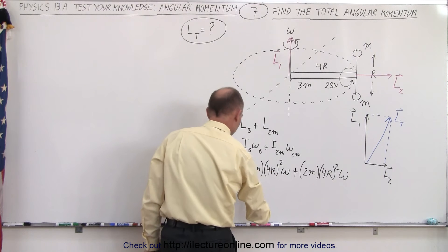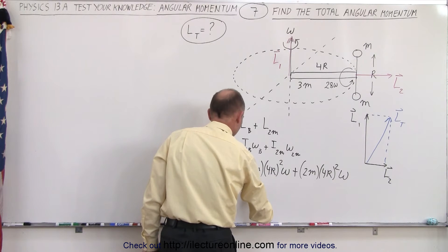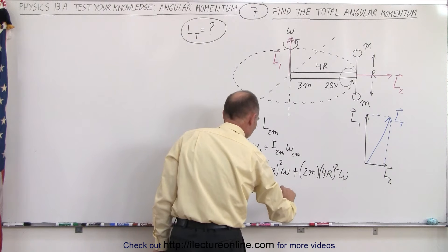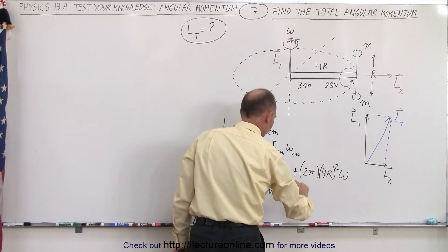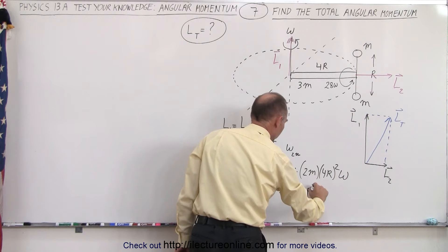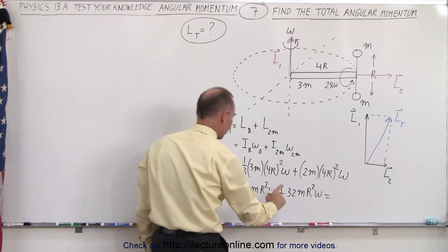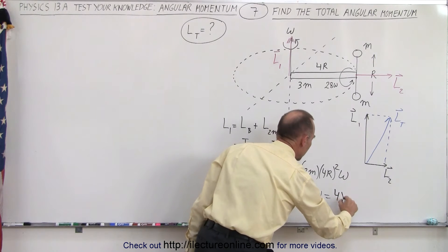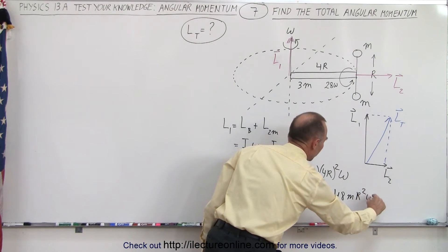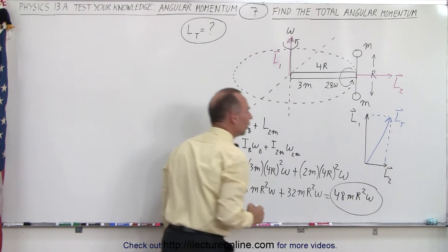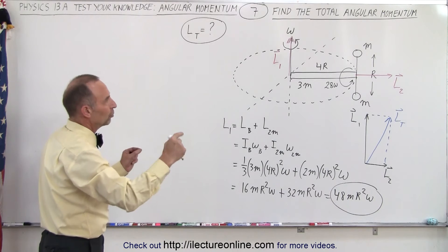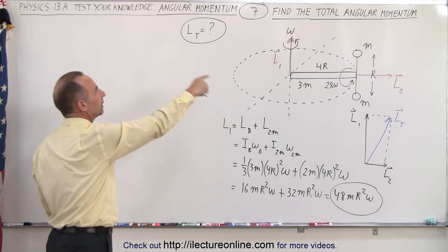The 3s cancel out, so this gives 16MR²ω, plus 16 times 2 which is 32MR²ω. So the total together would be 48MR²ω. That is the total angular momentum of the bar and the two masses rotating at omega in the horizontal direction.